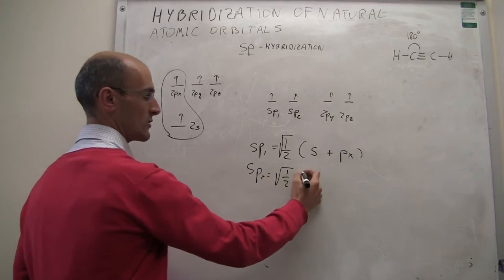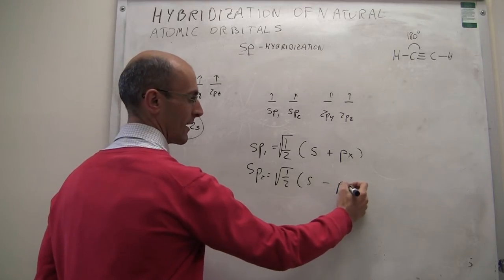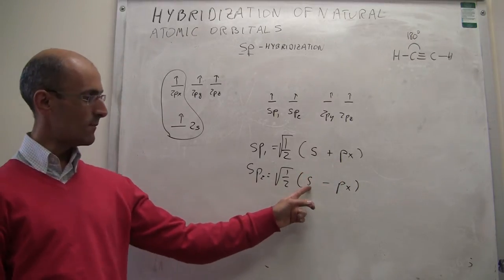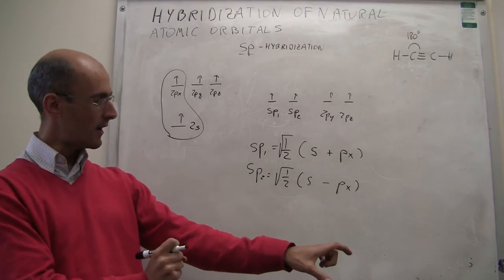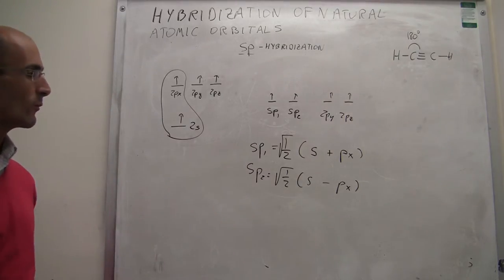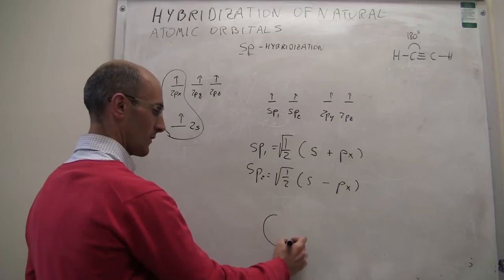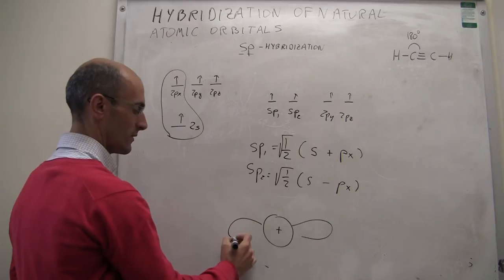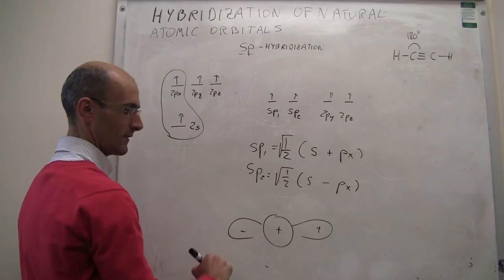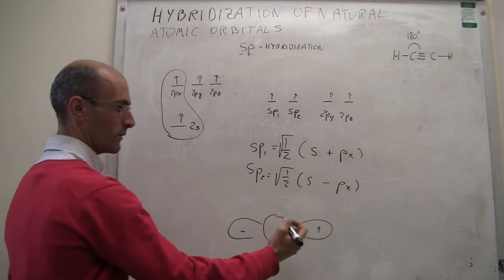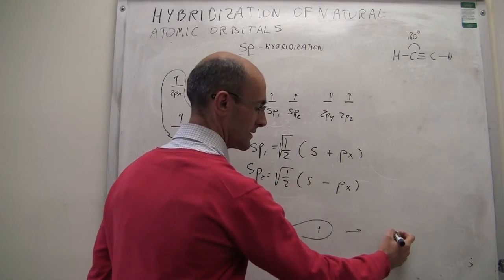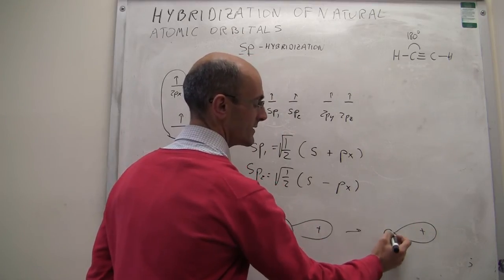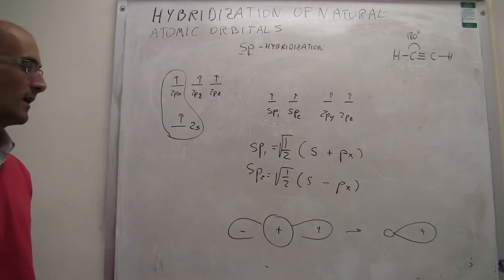Let's see why combining 2s + 2px and 2s − 2px gives two orbitals that are antiparallel — forming 180 degrees. For the first combination, the 2px orbital has its axis pointing in the positive direction. When you mix these two with equal coefficients, you get an orbital that has a large positive lobe pointing in one direction and a small negative lobe on the other side.